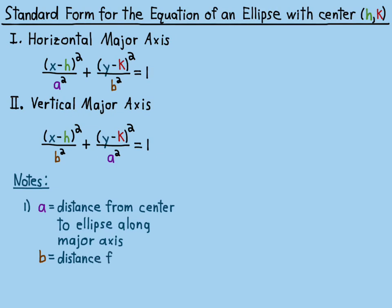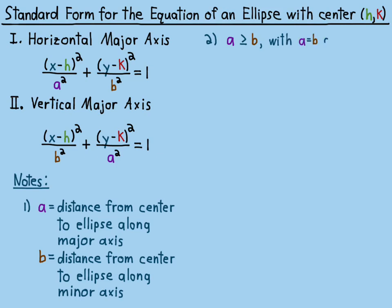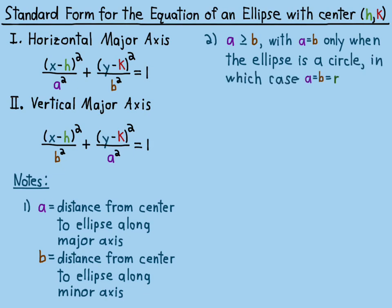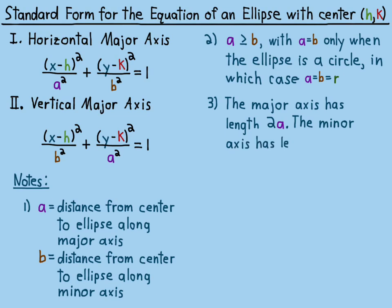Note 1: a equals the distance from the center to the ellipse along the major axis — that is, to the endpoint of the major axis — and b is the distance from the center to the ellipse along the minor axis. Note 2: a is greater than or equal to b, with a equals b only when the ellipse is a circle, in which case a equals b equals r, the radius. Note 3: the major axis has length 2a and the minor axis has length 2b, because a and b are distances from the center, so you double them to get the full axis lengths.